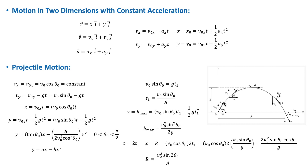The x component of the initial velocity is v₀ₓ = v₀ cos θ₀ and the y component is v₀ᵧ = v₀ sin θ₀. Assuming at t = 0 that x₀ = 0 and y₀ = 0, and knowing that a_y = −g and a_x = 0, substituting into the kinematic equations gives the equations for projectile motion.